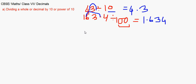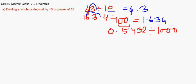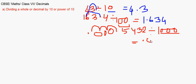Another example: 0.5432 divided by 1000. The decimal must move three places to the left. Since there aren't enough digits to the left, we add extra zeros. So the answer becomes 0.0005432.